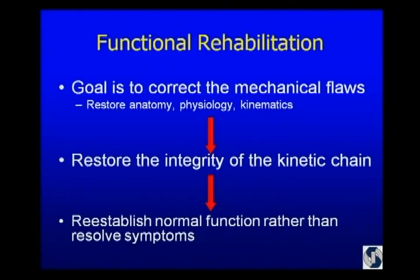Our rehab is functional — we're not looking to resolve symptoms, we're looking to reestablish normal function. To do that, you identify the mechanical flaws on the exam and the physical therapist does the same. Then you figure out what you have to do to restore the anatomy, physiology, and kinematics. If you've crossed the vertical red line in Giovanni's talk, you have to correct the anatomy with surgery, then go back into rehab to establish normal physiology and kinematics. Ultimately, you want to restore the integrity of the kinetic chain, and that will give you normal function.